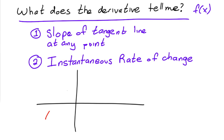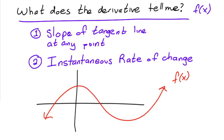So as a consequence of this — let's say you have a function f of x. At any point where the function is increasing, the tangent line is going to have a positive slope. So if the derivative is positive, that tells you the function is increasing. If the derivative is negative, that tells you the function is decreasing.